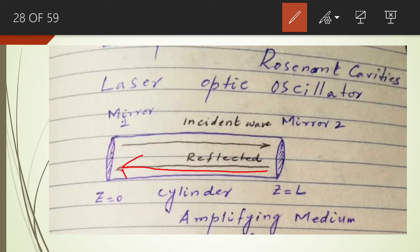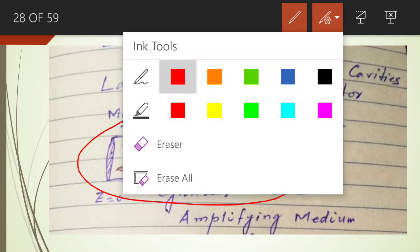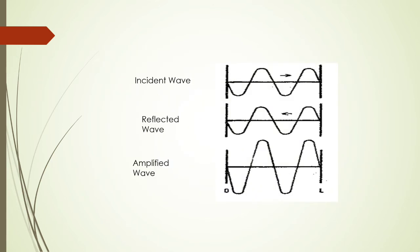The reflected signal travels along the negative Z-axis. We design this laser in such a way that the constructive interference of the incident wave and the reflected wave will take place in this particular medium, and the signal will be amplified. The light signal will be amplified inside the cylinder due to constructive interference.